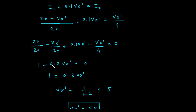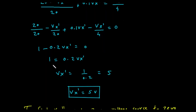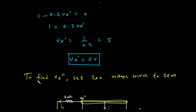So the equation becomes: 1 minus 0.2 Vx prime equals 0. By adding 0.2 Vx prime to both sides, we get 1 equals 0.2 Vx prime. Finally, to find Vx prime, we divide 1 by 0.2. Vx prime equals 1 divided by 0.2, which equals 5. So we have found that Vx prime is 5 volts.